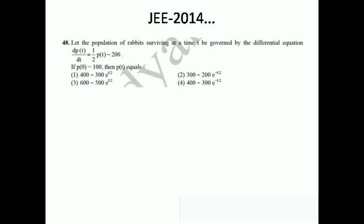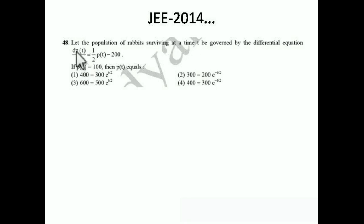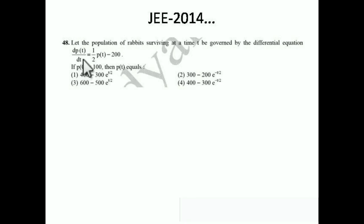One more example from JEE 2014: Let the population of rabbits surviving at time t be given by the differential equation dp(t)/dt = (1/2)·p(t) − 200.